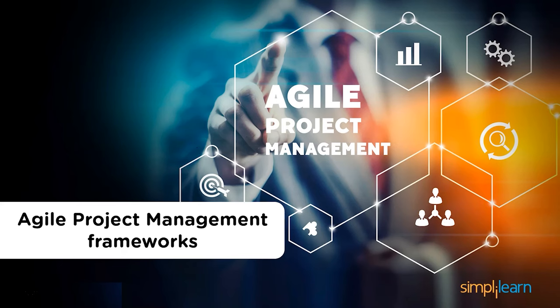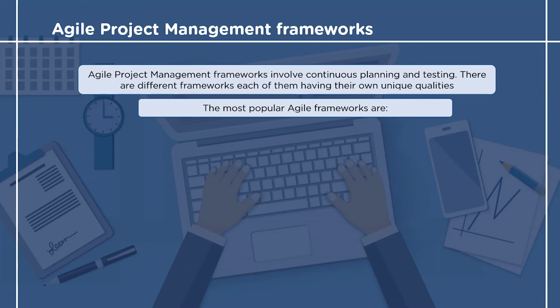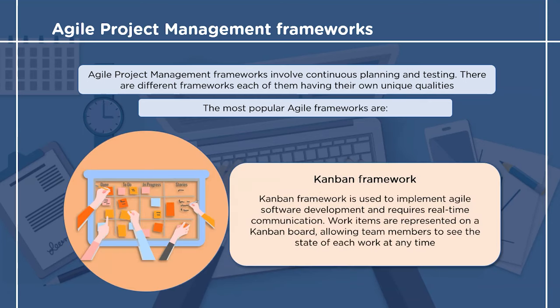Now that we know the steps needed for agile project methodology, we must understand some agile project management frameworks. There are several frameworks available today; here we will discuss some of the most popular ones. The first framework is the Kanban framework, a well-known framework for implementing agile software development. In Kanban, work items are represented on the Kanban board which helps all team members see the state of every piece of work at any time.